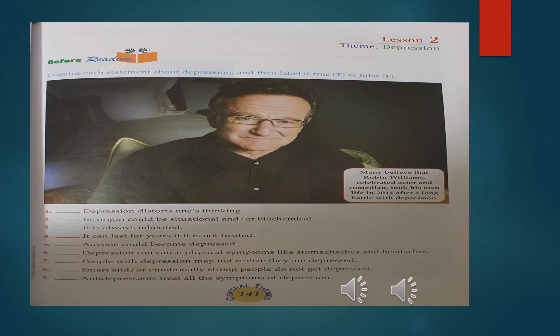Refer to your course books on page 141 to read the sentences and identify them as true or false. Take some time to do this activity before we discuss the answers. The statements related to depression that are true are numbers one, two, four, five, six, and seven. The statements that are incorrect about depression are numbers three, eight, and nine.